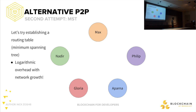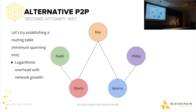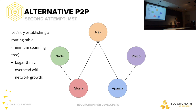Different model — take two. What is an MST? A minimum spanning tree. It's a way of connecting the entire graph. A graph is a representation of networks through nodes and edges. Instead of connecting everybody to everybody else, we draw the minimum number of lines between nodes such that everybody can reach everybody else. For example, Nadir can reach Philip by going through Gloria, Max, and Aparna.